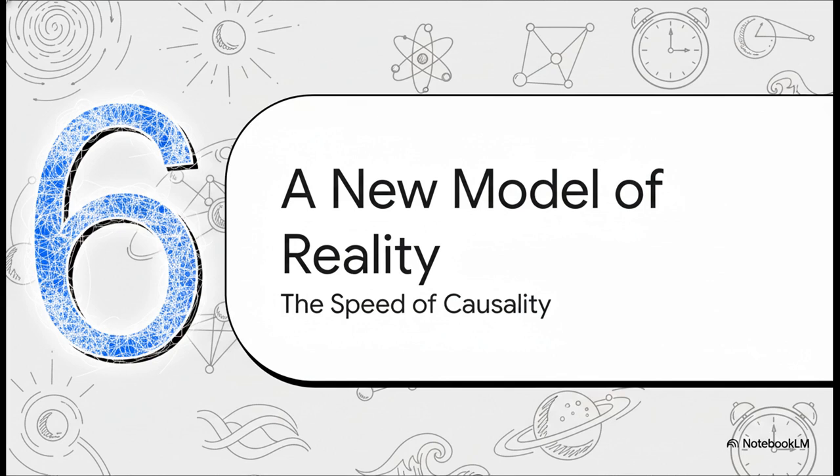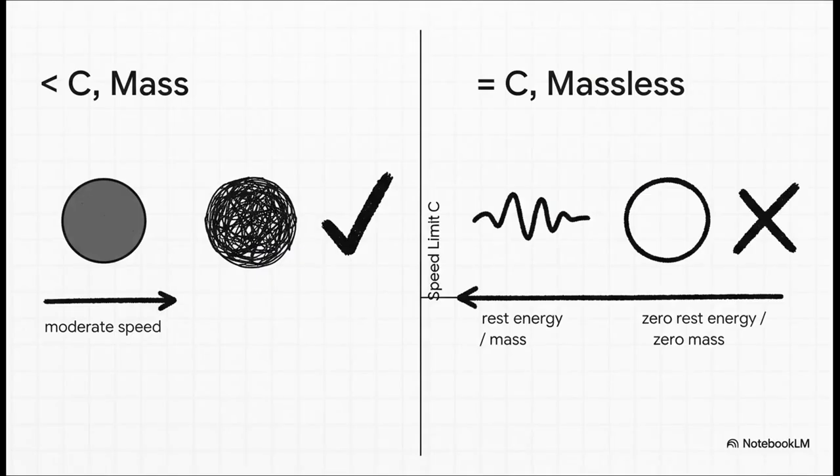And all of this leads to a new, much deeper way of looking at reality. This ultimate speed limit isn't really about light. It's the speed of something more fundamental. It's the speed of causality. The speed of cause and effect. Which leaves us with two beautiful, simple rules that govern everything. Rule number one. If something travels slower than the cosmic speed limit, you can be at rest with it. That means it must have rest energy, and therefore it must have mass. That's you, me, this planet. Rule number two. If something travels at the cosmic speed limit, you can never be at rest with it. Which means it has zero rest energy, and it must be massless. That's the photon. It's not a choice. It's a fundamental consequence of how space-time is built.